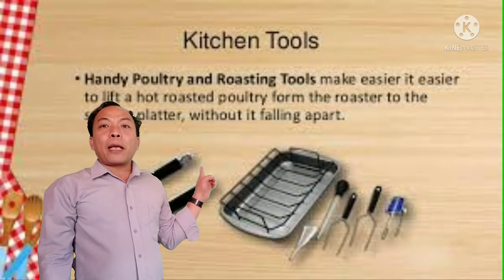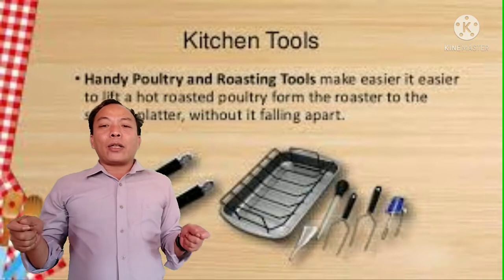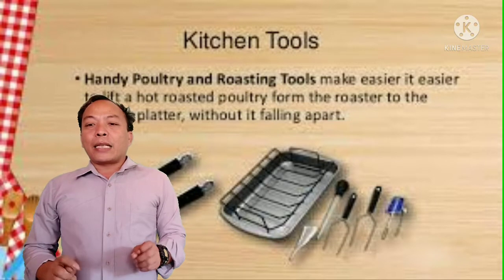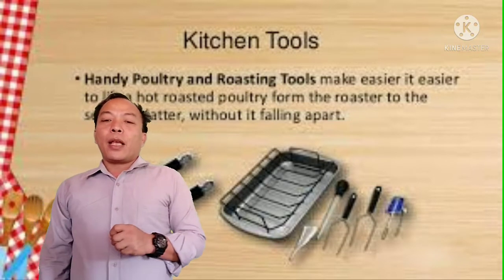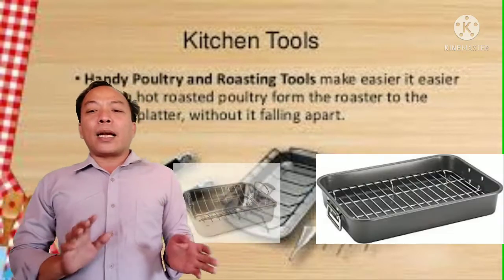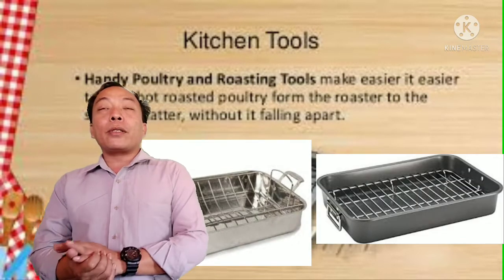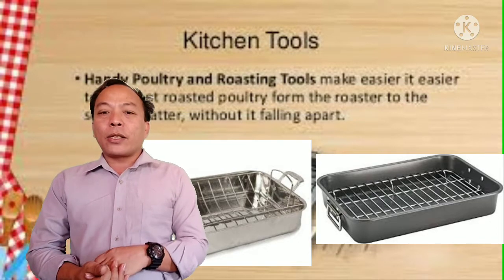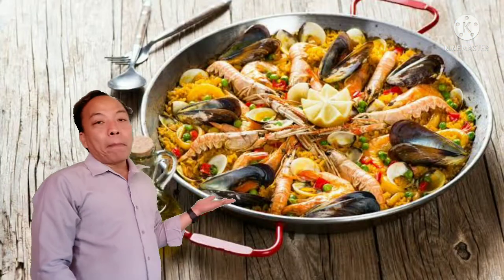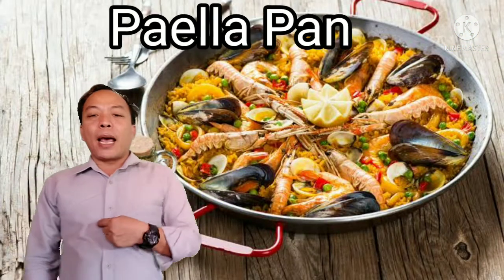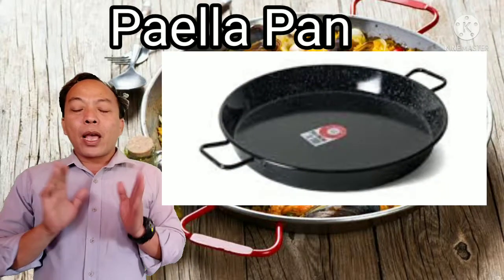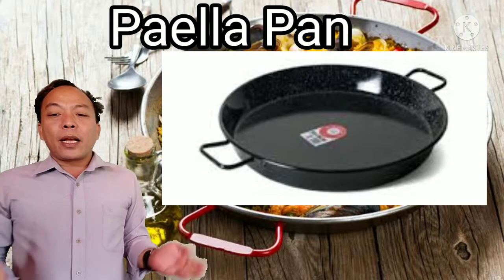Next we have the roasting pan. The roasting pan has handles that allow for easy oven loading and unloading as well as convenient transportation. It has heavy-duty construction and a large size to accommodate roast hams and turkeys.